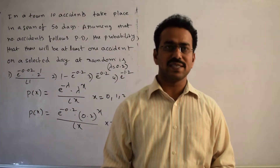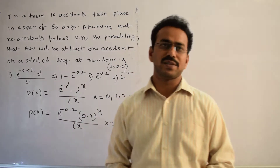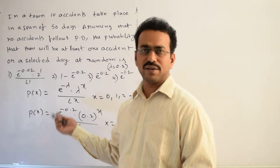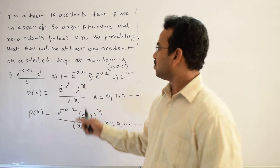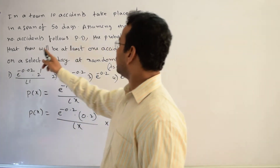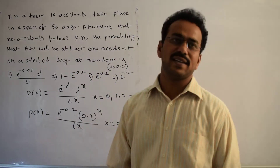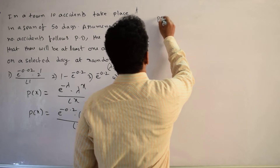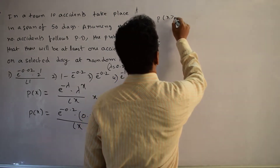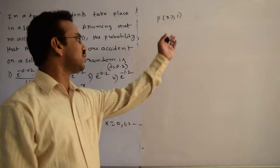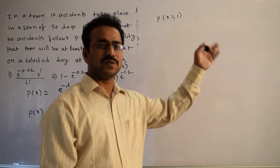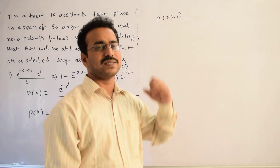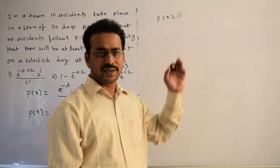When solving this type of question, first think about what exactly is being asked. We already have the lambda value, so what they are asking is the probability that there will be at least one accident. At least one accident means we have to calculate the probability of x greater than or equal to 1, which expands to P(1) + P(2) + P(3) + P(4), and so on — a very long expression.